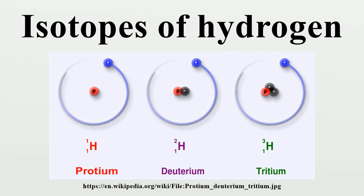Hydrogen-5 (5H) is a highly unstable isotope of hydrogen. The nucleus consists of a proton and four neutrons. It has been synthesized in the laboratory by bombarding tritium with fast-moving tritium nuclei. In this experiment, one tritium nucleus captures two neutrons from the other, becoming a nucleus with one proton and four neutrons. The remaining proton may be detected, and the existence of hydrogen-5 deduced. It decays through double neutron emission into hydrogen-3 and has a half-life of at least 910 yoctoseconds.